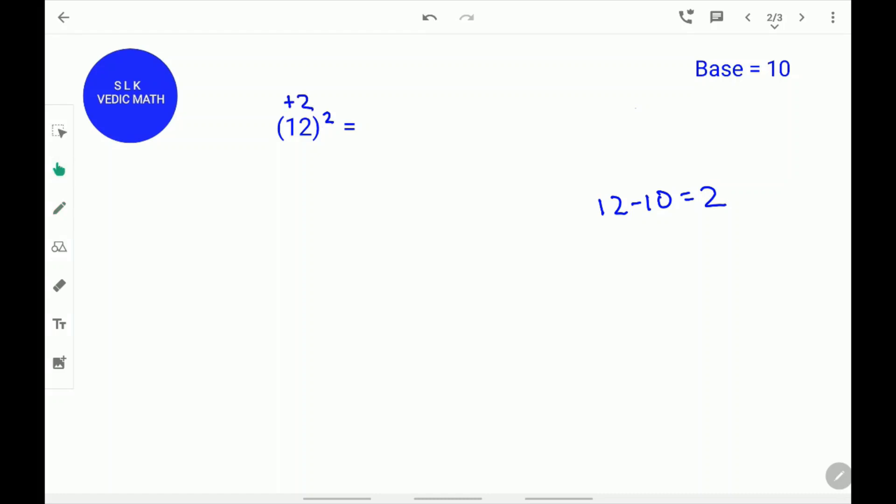Next, add this difference 2 to 12. 12 plus 2 is 14. 14 is our first part of the answer. One more digit to go because there is 1, 0 in 10.